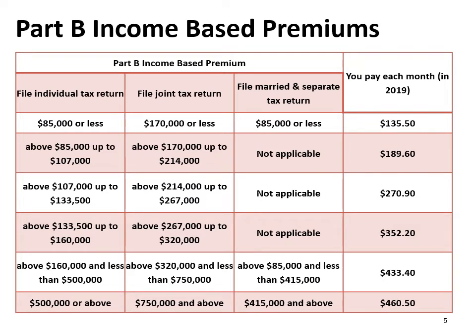Your Part B premium is also based on how you file your tax return — single, married filing a joint return, or married filing separate returns. Increases or decreases in your adjusted gross income result in an increase or reduction in your Part B premium for the current year.